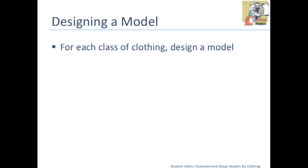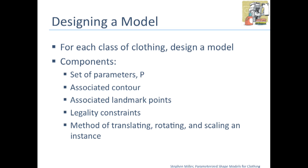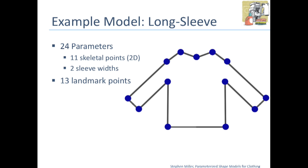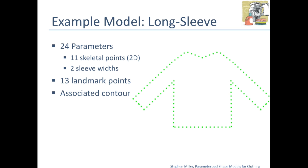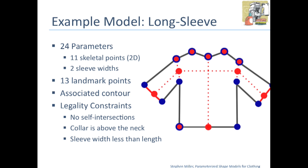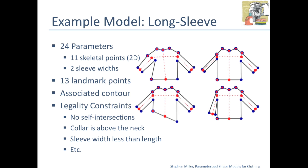For every class of clothing, we're designing a model with a few components: a set of parameters to define the structure, an associated contour and landmark points, a number of legality constraints on the configuration, and a method of translating, rotating, or scaling the instance. For example, on a long-sleeve shirt, we have 24 parameters — 11 skeletal points which add 22, and then two sleeve widths. There are 13 landmark points shown in blue, and then a contour associated with it. Legality constraints include: no self-intersections, the collar has to be above the neck, the sleeve width has to be less than its length, and other common sense things that would rule out incorrect configurations.